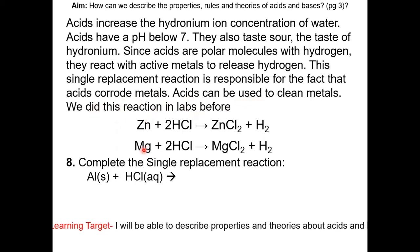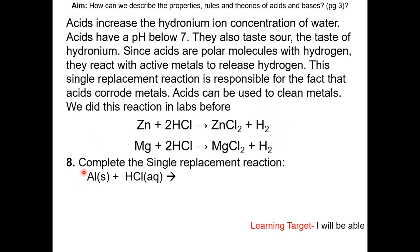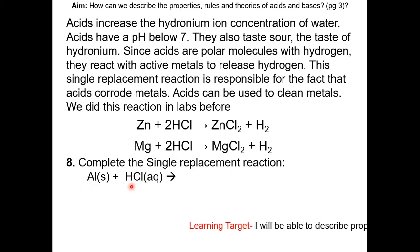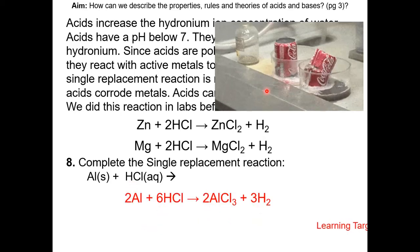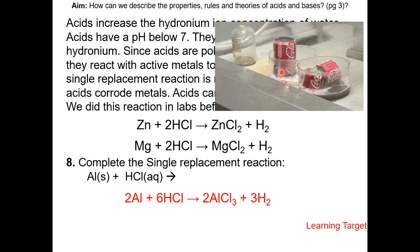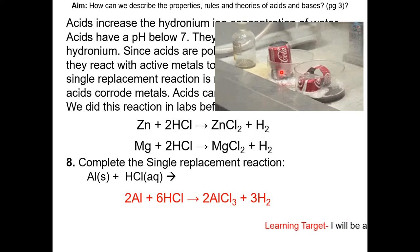Here were the two reactions we did in labs. Zinc and magnesium were the metals. HCl is an acid, and when they react, they produce hydrogen gas. Complete the single replacement reaction below: aluminum, which is a metal, reacting with HCl, which is an acid, will also produce hydrogen gas. Here's a gif of the reaction — HCl reacting with a can made of aluminum, producing hydrogen gas.